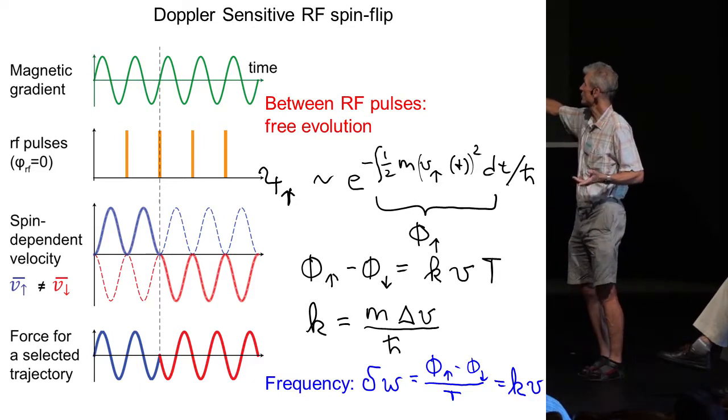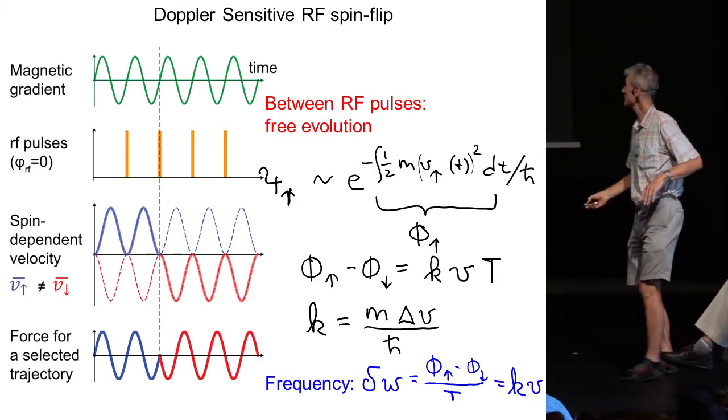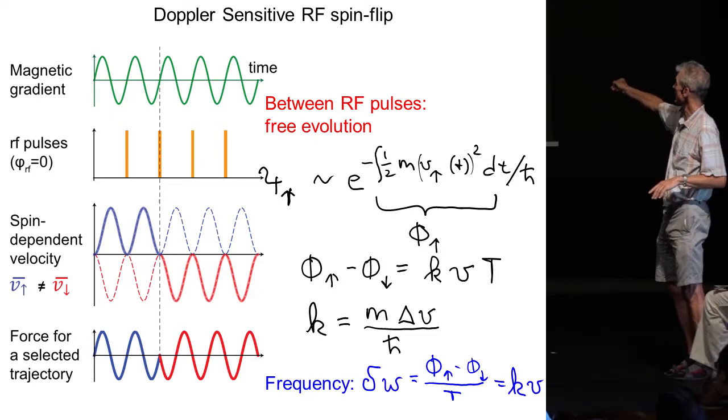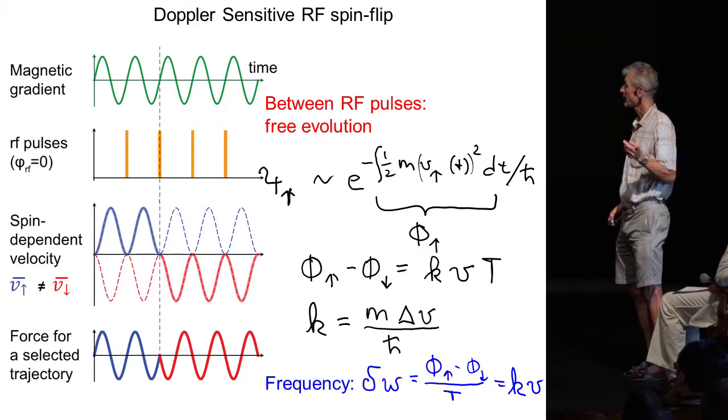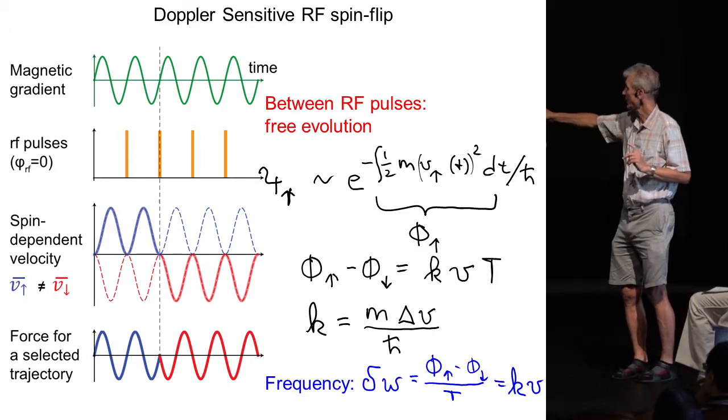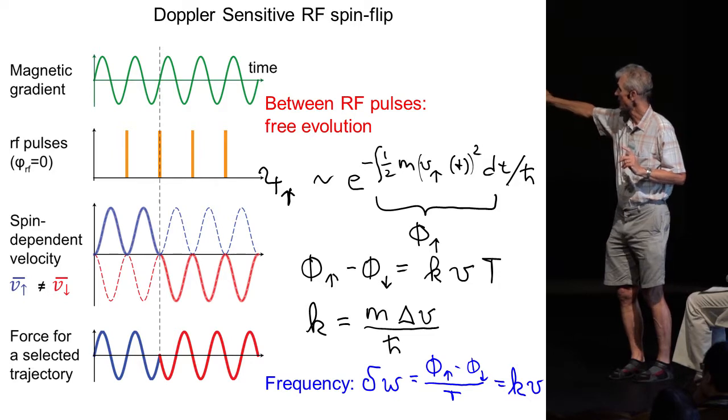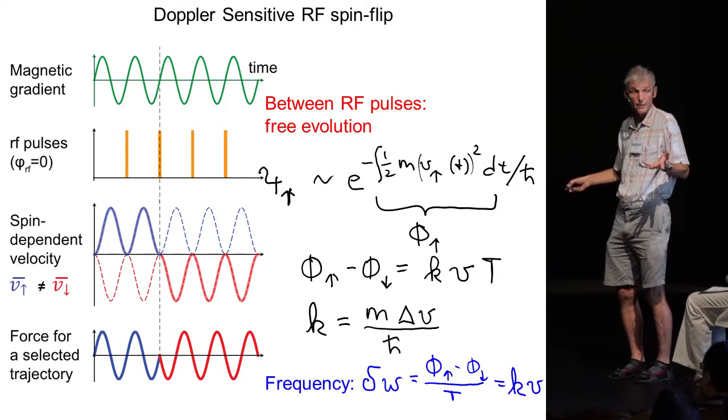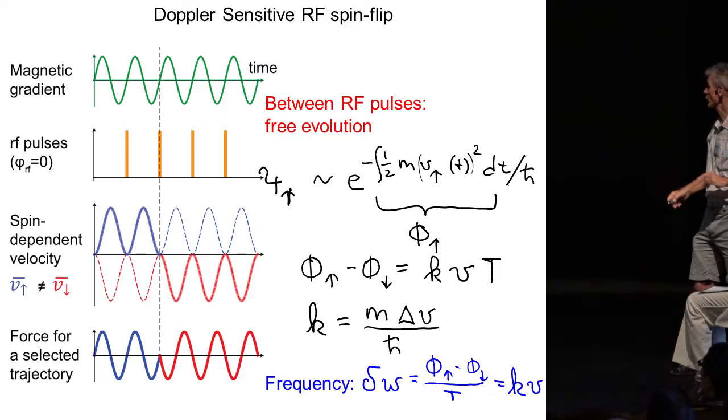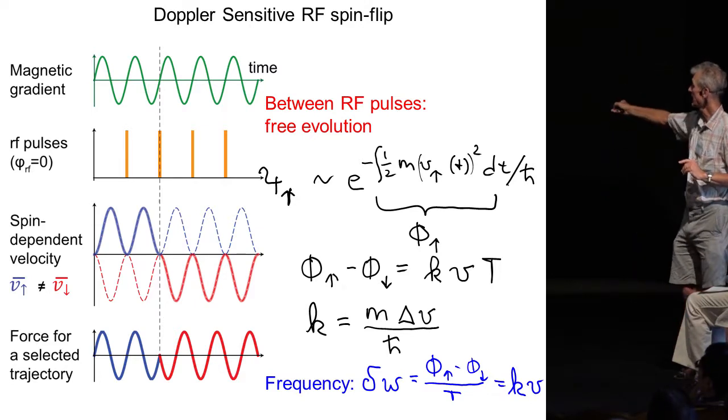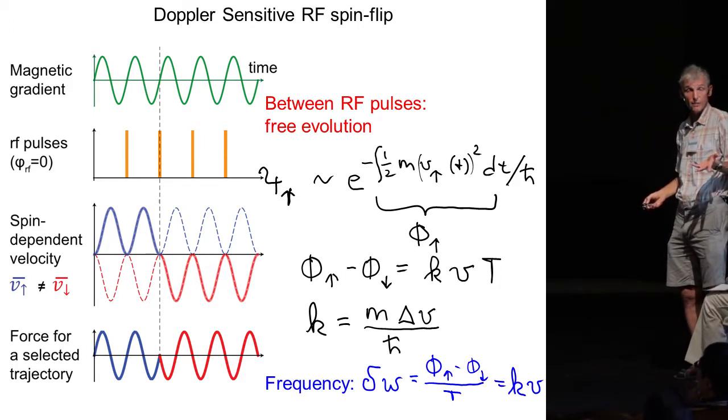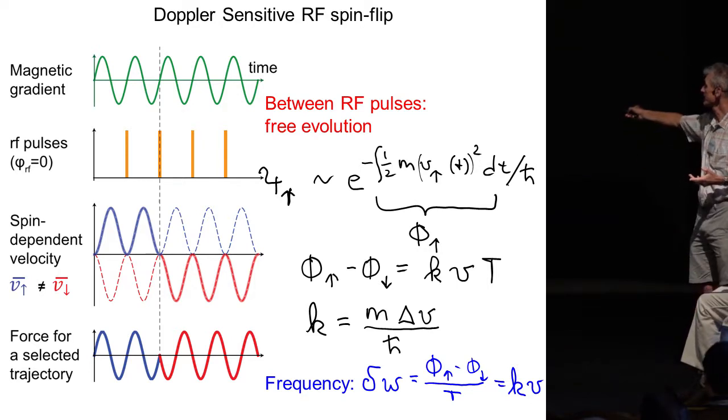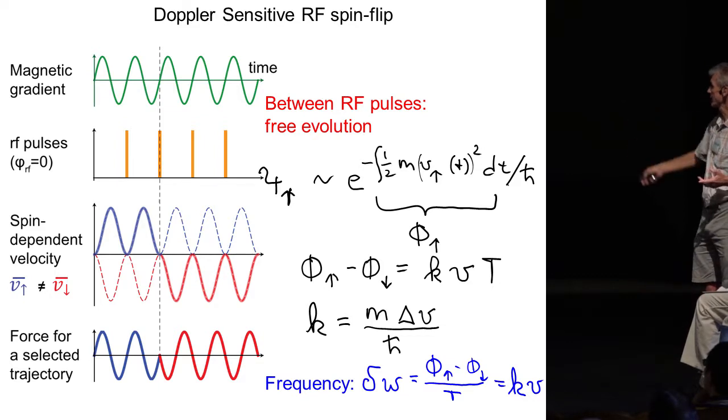And the phase evolution between the two pulses is phase evolution in free space. Therefore the phase evolution is the time average kinetic energy. And I mentioned to you is that the velocity in spin up and spin down is different during the shaking. So therefore a superposition state of spin up and spin down accrues a phase shift due to the different kinetic energy. And this phase shift can be written as KV times the pulse time.